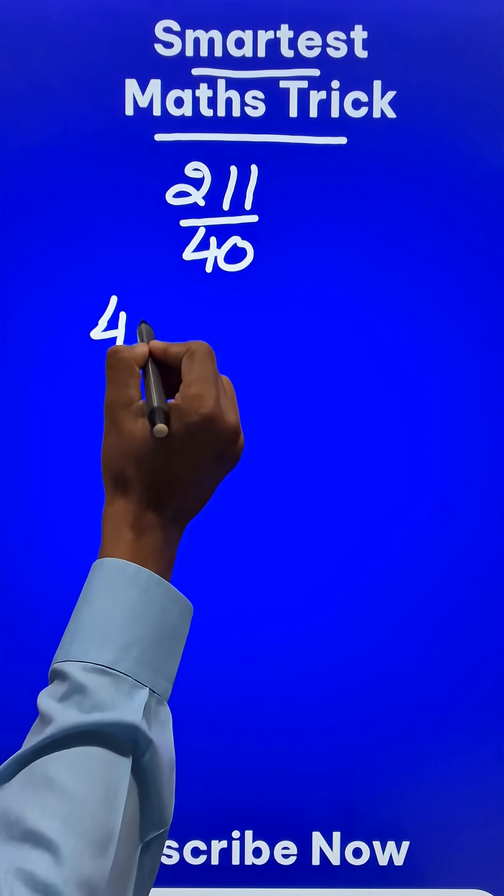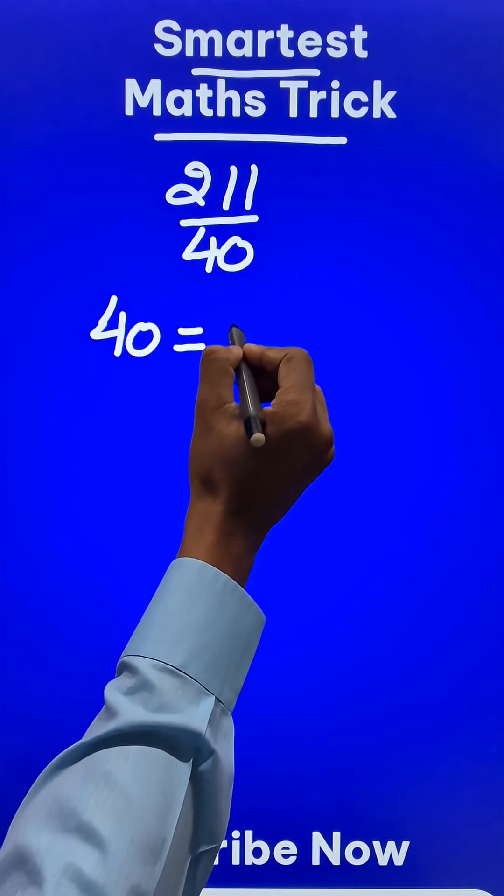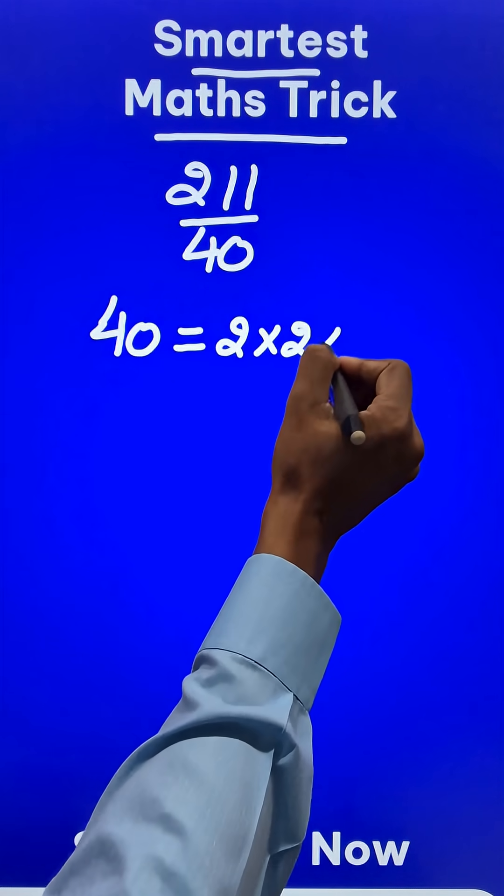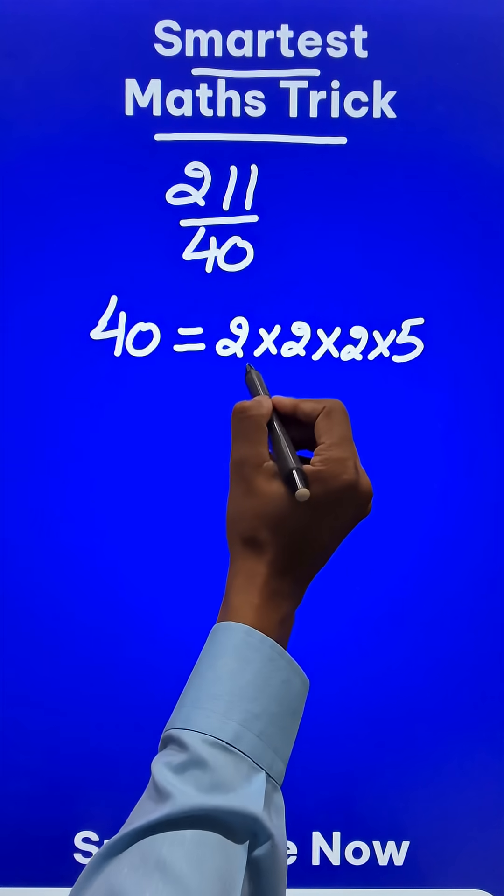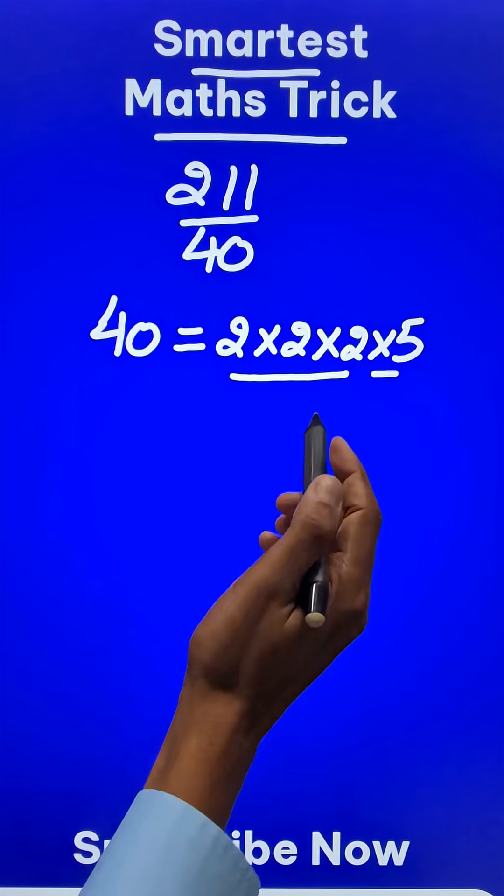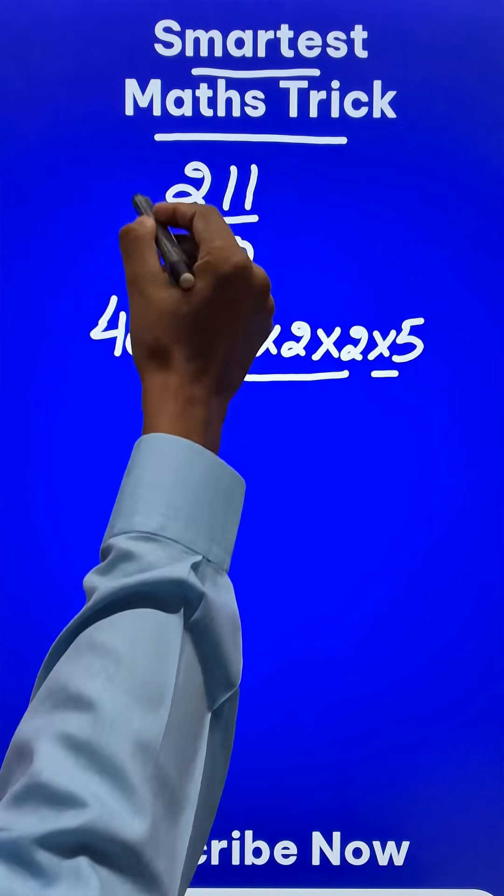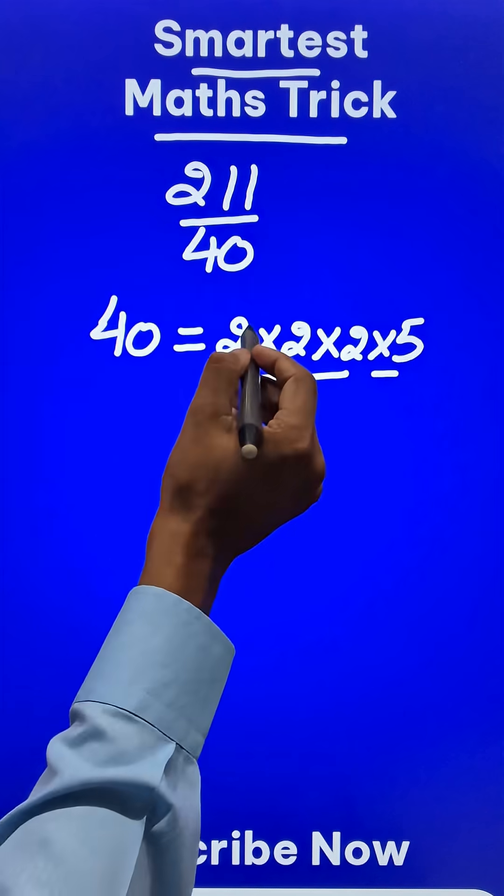For that, the denominator 40 is to be converted into its prime factors: 40 is 2 times 2 times 2 times 5. Observe that the factors of 40 only contain 2s and 5s, and whenever that happens, the given fraction has a terminating decimal.